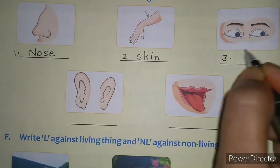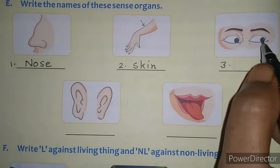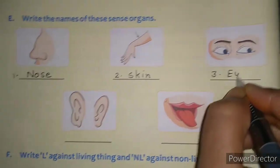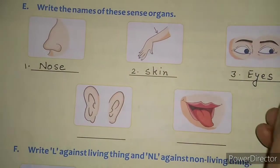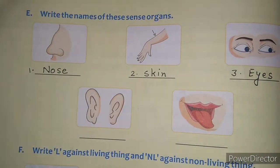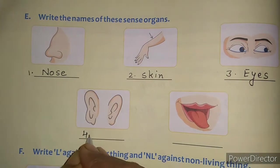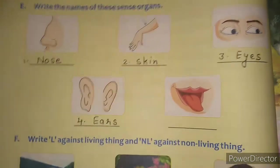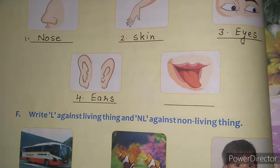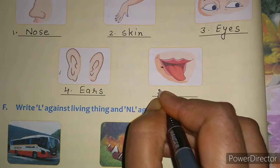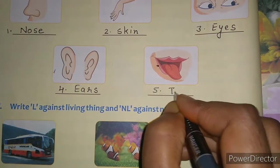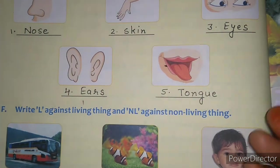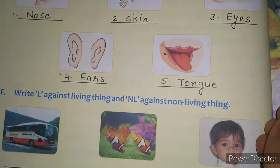Third is — what is this children? We see things with it. Yes, it is eyes. We see things with our eyes. Next, fourth, is ears. We hear different sounds with our ears. And the last, fifth, is tongue. What do we do with our tongue? We taste different things.